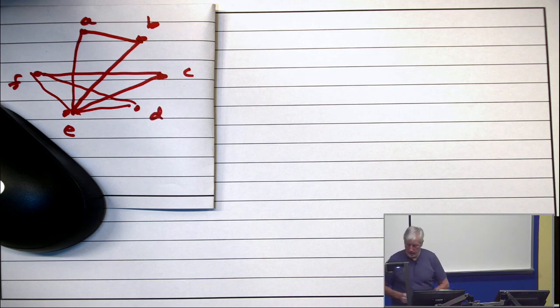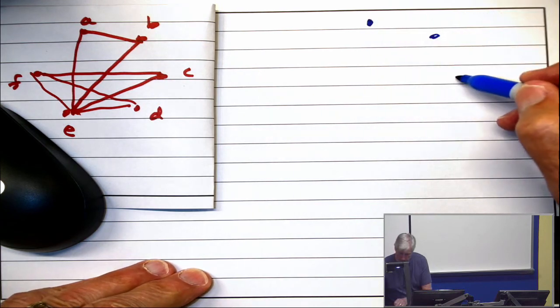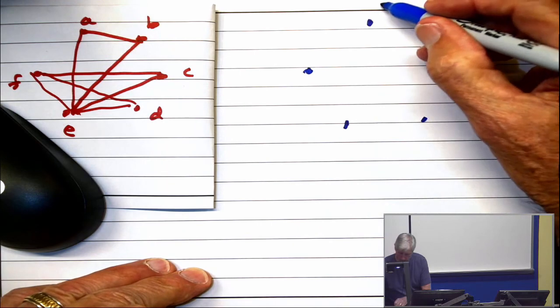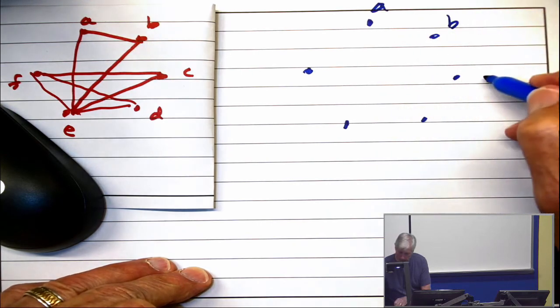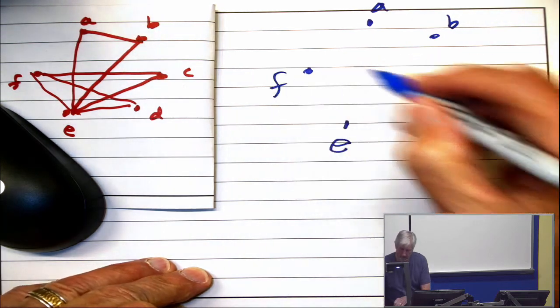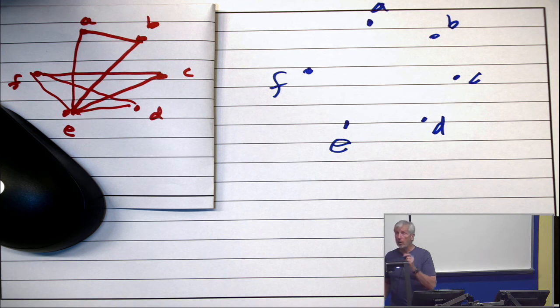Step one. Take the complement. A, B, C, D, E, F. All right. Question? Is it important that we're told what kind of graph it is? No, it's a graph. Just a graph.